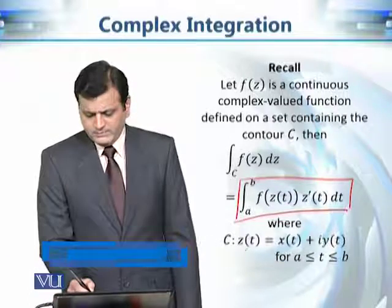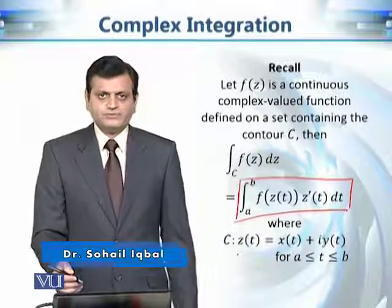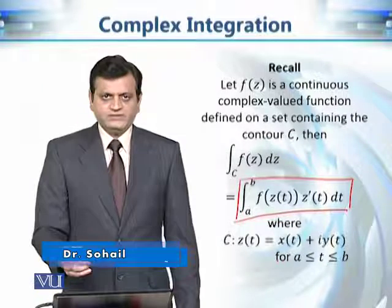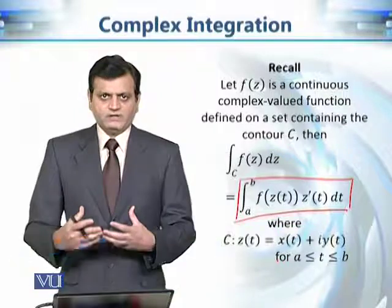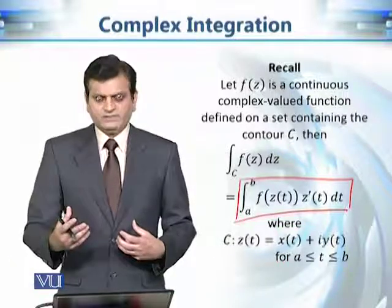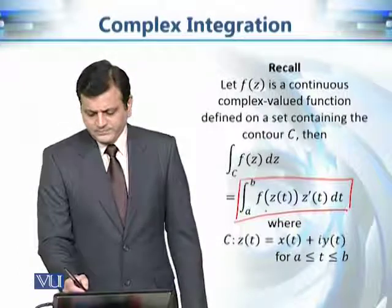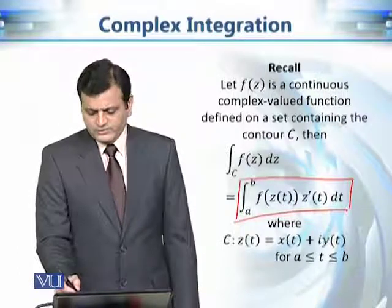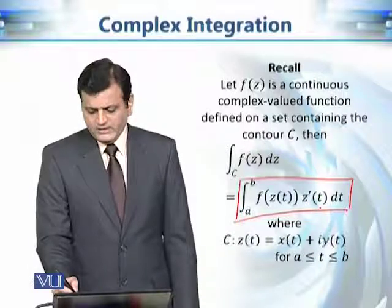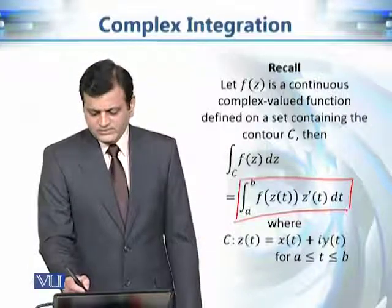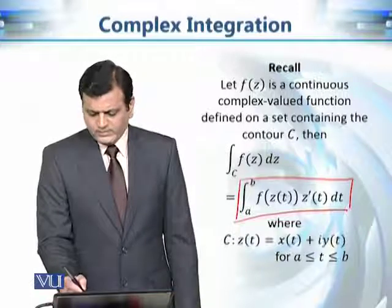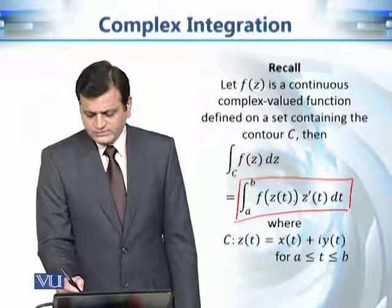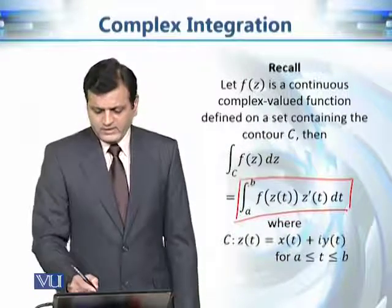We are going to need the parameterization of this contour. It starts from z of a, it ends at z of b, and there is a direction of motion — we are moving from z of a to z of b. We evaluate it by computing f of z of t, multiplying it with the derivative z prime of t, and integrating this as a complex valued function of one variable t from a to b.